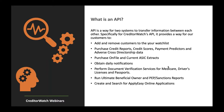At a very high level, what is an API? It's really just a way for two computer systems to talk to each other and share data. The most common ways our customers use it include managing their watch list — adding and removing customers, checking daily alerts, purchasing credit reports, scores, payment predictors, and viewing adverse cross-directorship data. That data can get quite complex, so an API integration is quite useful.